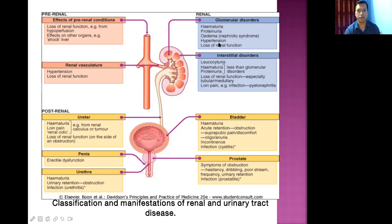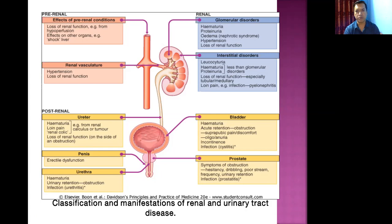Renal disorders where kidneys are directly damaged are broadly divided into two types: glomerular disorders and interstitial disorders. The common manifestations of glomerular disorders — also known as acute nephritic syndrome — may include nephrotic syndrome as well. Both types of manifestation may occur; the more common one is nephritic syndrome.